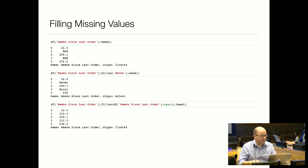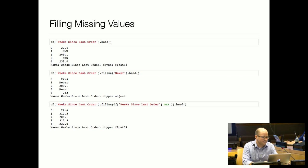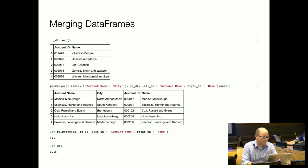Next we'll talk about working with missing values. We've created a column called weeks_since_last_order and some of those values are null. Pandas has a fillna method on Series — we could put in a string value and say if it's null, we'll say 'never'. We can also calculate a value to fill in. In a lot of contexts this might make sense: we take the max of weeks_since_last_order and fill all the null values with that maximum value.